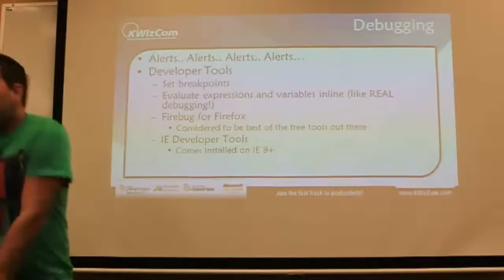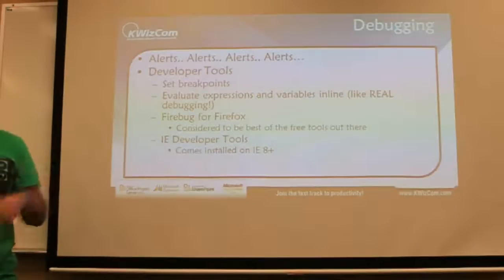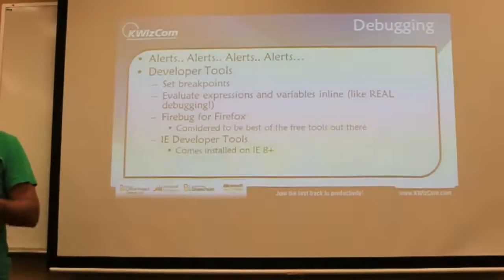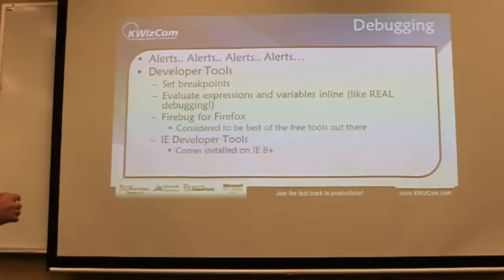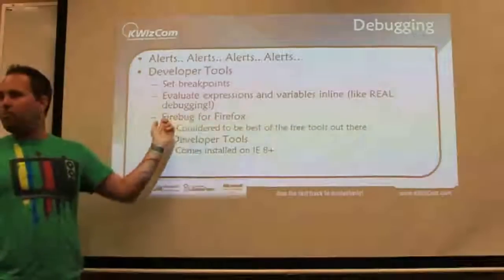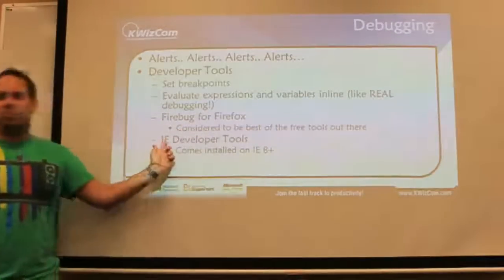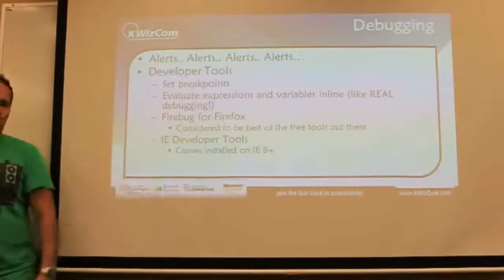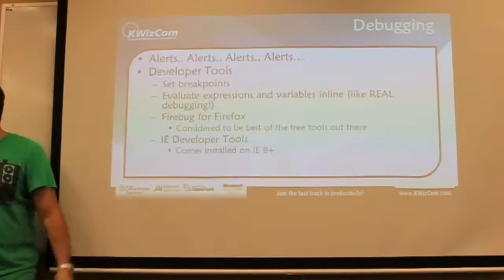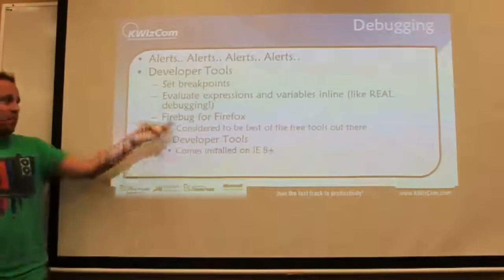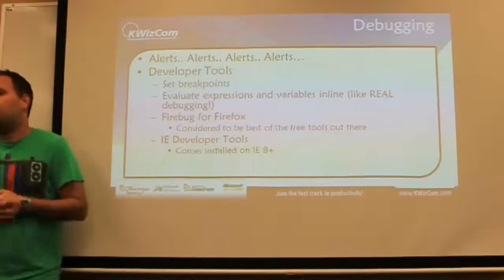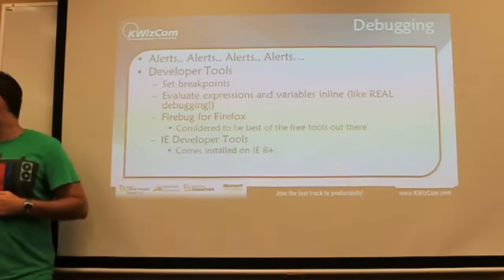More on debugging. If you've done JavaScript, you know about alerts — put an alert everywhere. Sometimes I throw in random variables that don't exist just to get a random breakpoint so I can start from there. I actually use the IE developer toolbar most often — it's actually gone really good. I know some people say Firebug is the best, but I personally prefer the IE developer toolbar.